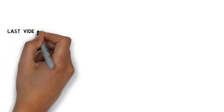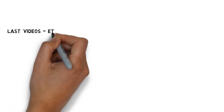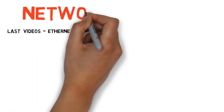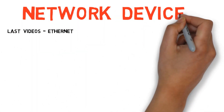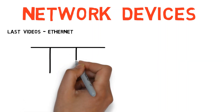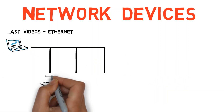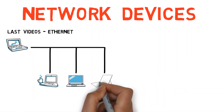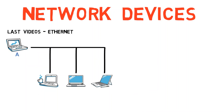In the previous videos we talked about the Ethernet protocol. In this video, we'll consider network devices. Before that, let's consider a network without special network devices — a network using classic Ethernet, where all computers are attached to a single cable. In this case, if computer A sends a message to another computer, for instance B, the message is sent over the shared cable and all devices receive it.